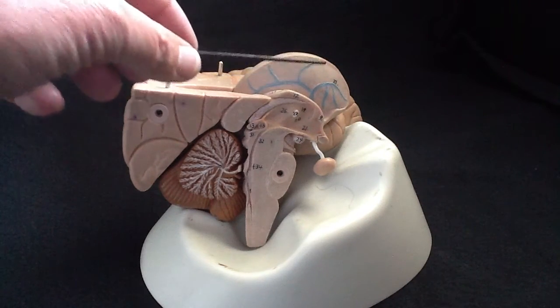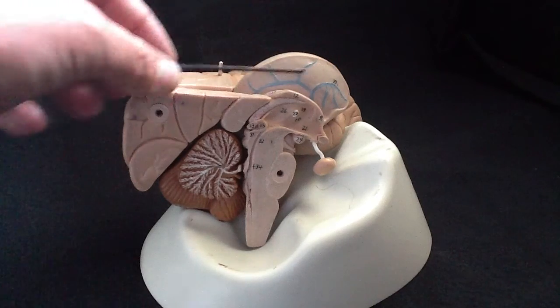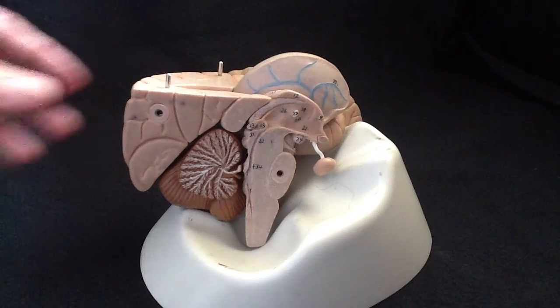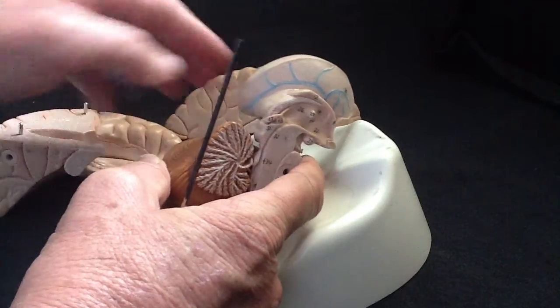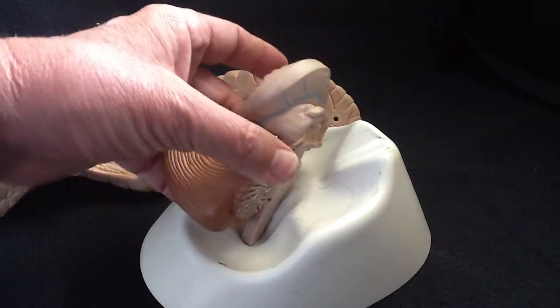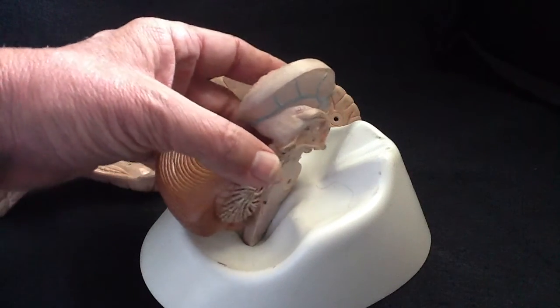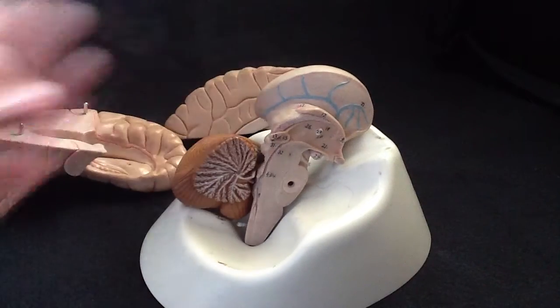But it's very difficult to study the diencephalon unless you have this whole picture of it. I'll remove the rest of the cerebrum here, and you can see this half of the diencephalon in the image here.